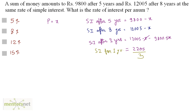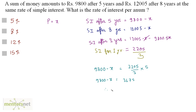Now I have the simple interest for 1 year. I can calculate the simple interest for 5 years. So 9,800 minus x equals the simple interest for 1 year times 5, that is 2,205 divided by 3 times 5. Solving this gives 3,675. Therefore x equals 9,800 minus 3,675, which equals 6,125.